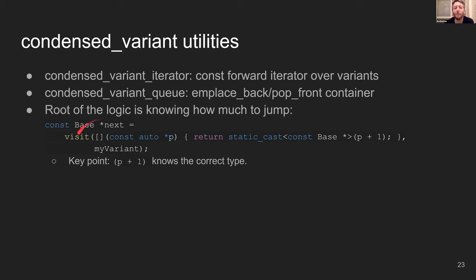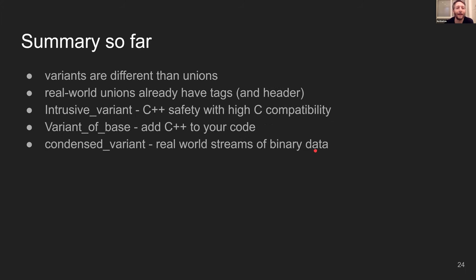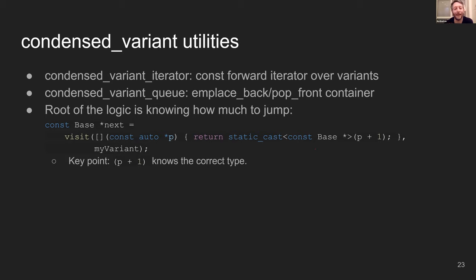The basic logic — the secret sauce — behind all of this is very simple. Just calling the `visit` function with a generic lambda that accepts a pointer P and returns P plus one. Because it's generic, the compiler generates different lambdas for the different types of my variant, and the `+1` for each type knows to increment by the correct size with alignment. Then I can static cast back to the base class, and with this operation I can go to the next item — that's the root of how I do my iterator.